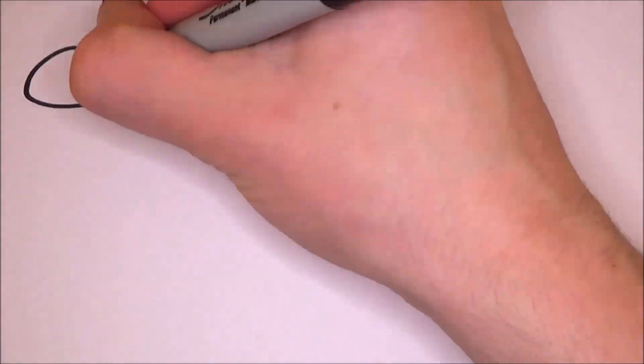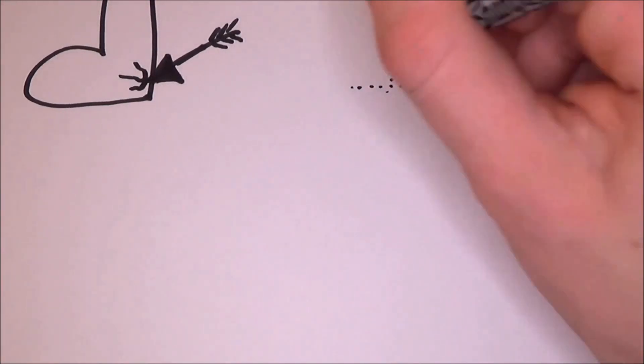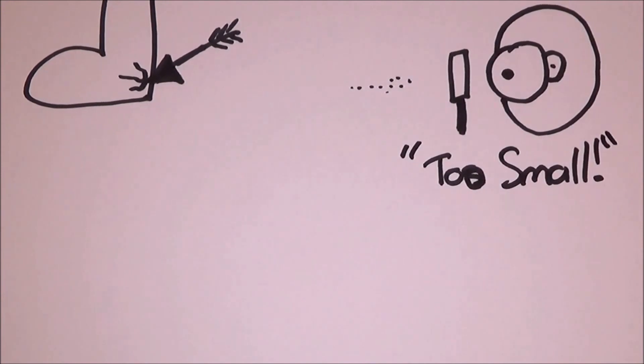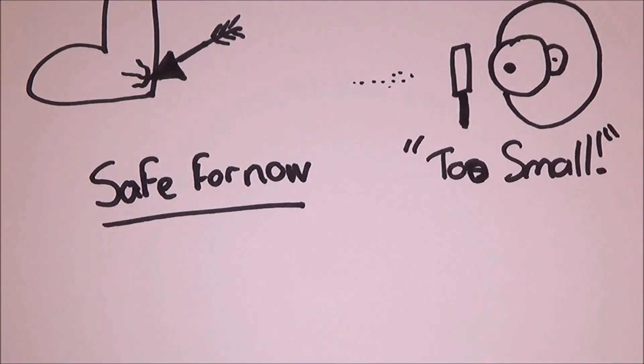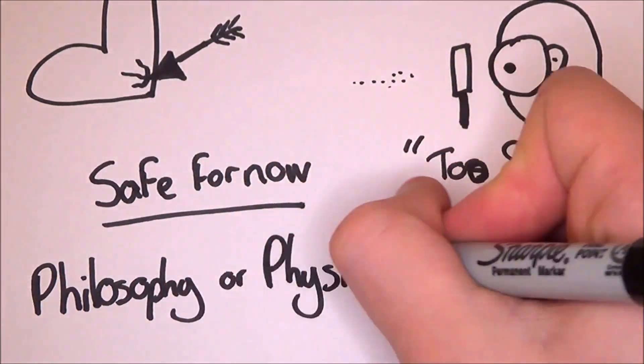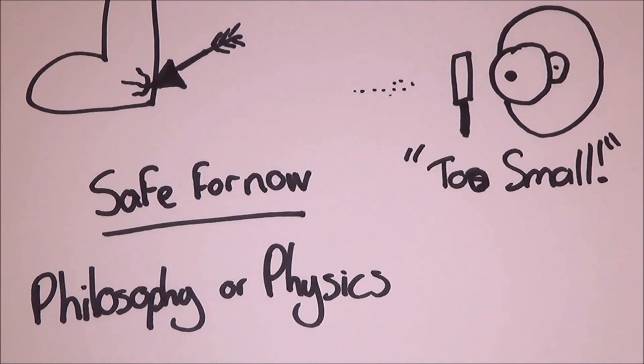However, the Achilles' heel of string theory is that no experiment can measure these tiny vibrations, as nothing can get that small. However, due to science being science and you have to be able to disprove something with evidence, the theory is safe due to the fact that nobody can get this small to make an observation and collect evidence. My question is now, is string theory philosophy or physics?